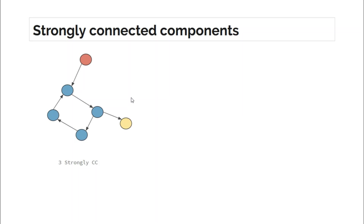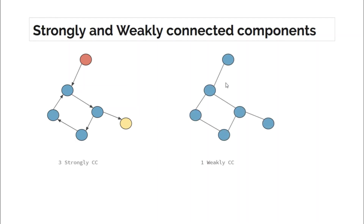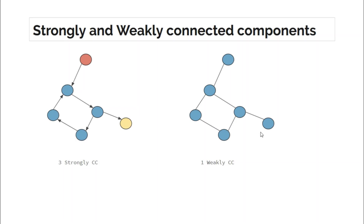Since this is a strongly connected component, there are other algorithms to find them and we will look at those algorithms later in this series. If the given graph is directed and we assume the edges are not directed, and then count the connected components, the result is a weakly connected component of that directed graph. So taking this directed graph and assuming no directed edges, the graph would contain only a single connected component, which is known as a weakly connected component.